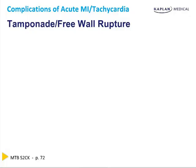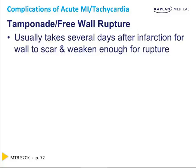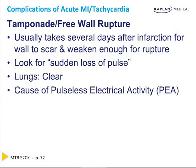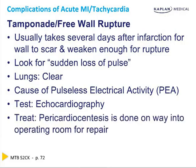Tamponade from free wall rupture is an unusual but serious MI complication, now far less common due to angioplasty and thrombolytics. When the muscle dies, weakens, and ruptures, the result is pulseless electrical activity — the patient presents with sudden loss of pulse but the EKG may look normal. Lungs are clear. Sometimes electrical alternans — alternating big and small complexes — is seen. Most accurate test is echocardiography; perform pericardiocentesis on the way to the operating room for repair.